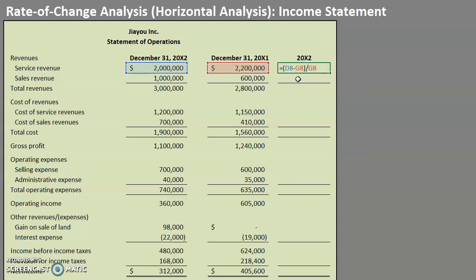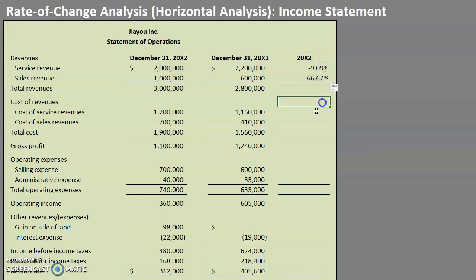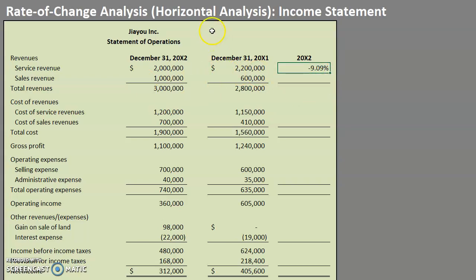But just to make it easier on ourselves, I'm going to use this fill handle here and drag down my formula, and we can see that the company's sales revenue has gone up by 66.67 percent. So that's actually quite a significant jump.